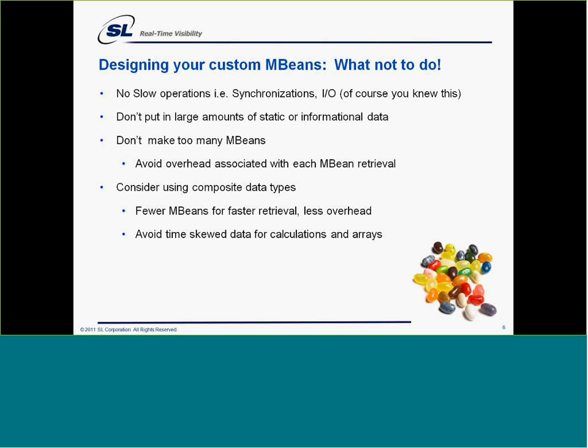So we've talked very quickly about the components of a standard MBE and how you actually register them. I just wanted to throw out very quickly the what-not-to-do — how to avoid big mistakes. Number one: you don't want to do any significantly slow operations within the MBEs, especially things that can cause race conditions or deadlocks — i.e., synchronizations or IO. This is just a checklist of what not to do.